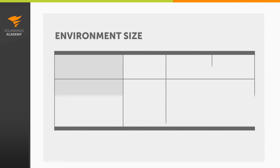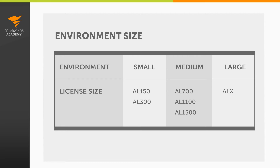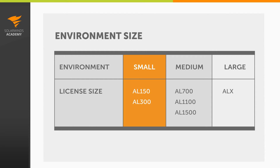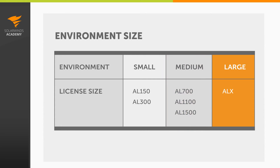First, let's take a look at what we mean by small, medium, and large environments. For SAM, we gauge the environment size by the number of components you are monitoring. A small installation generally tends to be an AL150 through an AL300 license. A medium installation is usually AL700 through an AL1500 license. And a large installation is an ALX or unlimited license.